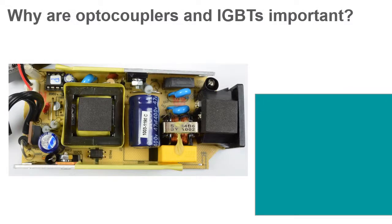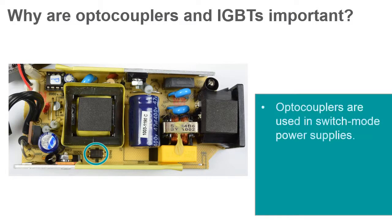Optocouplers have a number of important uses in electronics today. They can provide a safe way of monitoring high voltages, and they're used in inexpensive switch mode power supplies to provide isolation from ground, which helps bring the cost of electronics down.